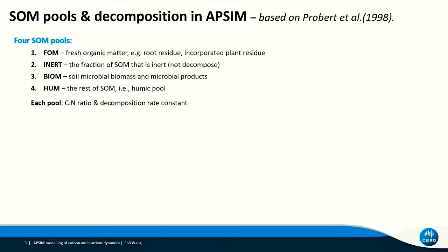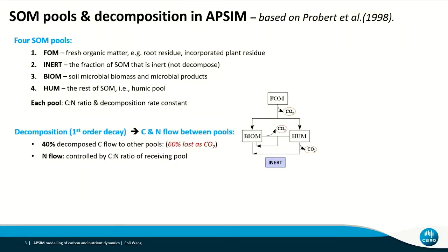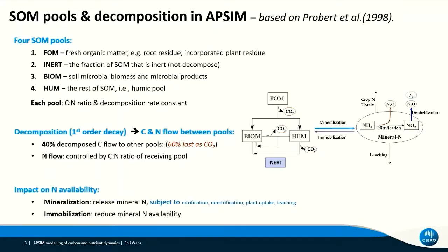Each of the pools has its own C2N ratio and a potential decomposition rate constant. Decomposition is simulated in EPSIM as a first-order decay process. Decomposition of soil organic matter pools will cause carbon and nitrogen flow between them. When a pool decomposes, 60 percent of decomposed carbon will be lost to the atmosphere as CO2, while 40 percent will be transferred to other pools. The nitrogen flow between pools is controlled by the C2N ratio of the receiving pool. The decomposition process also leads to mineralization or immobilization of soil nutrients, such as nitrogen.